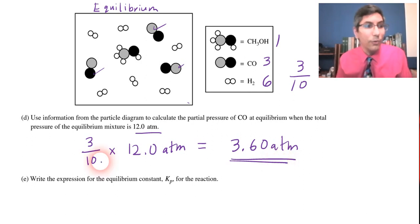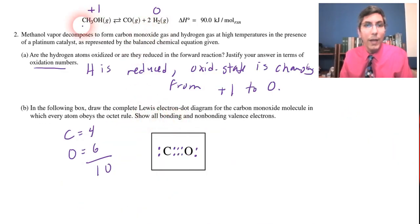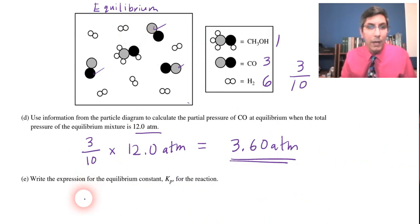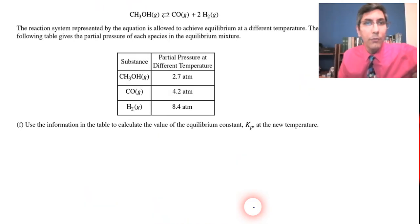Now for part E, that just says write the expression for the equilibrium constant Kp. So we go back to this balanced equation that was way back here. And it's just products over reactants raised to the power of the coefficients. And it's got to be in terms of Kp. So you have to write it as an equation, got to have the Kp equals, and then it's partial pressure of the H2 quantity squared times the partial pressure of the carbon monoxide raised to the first power all over the partial pressure of the methanol, CH3OH. And so you've got to have it looking like that. It can't be brackets because that implies concentration.